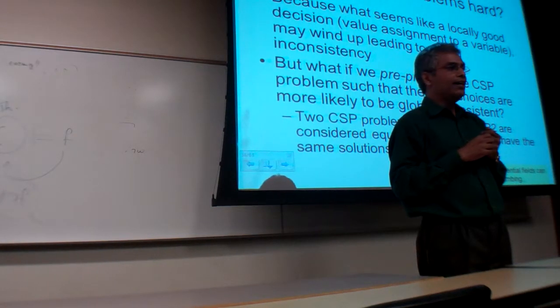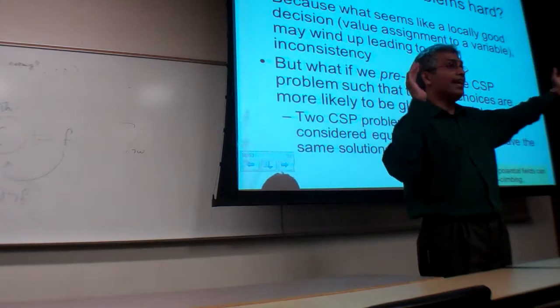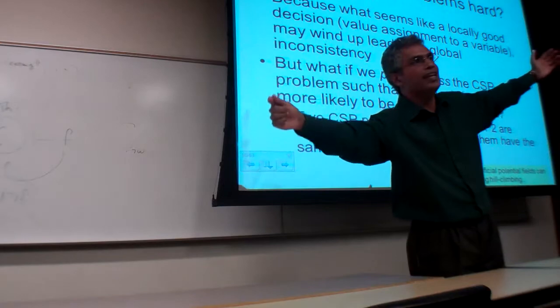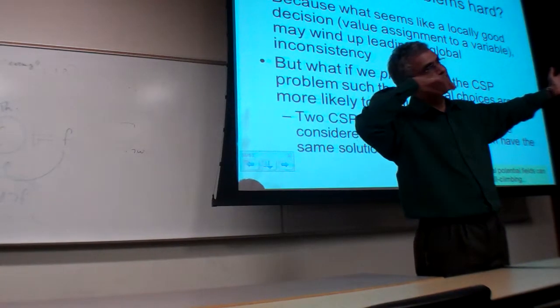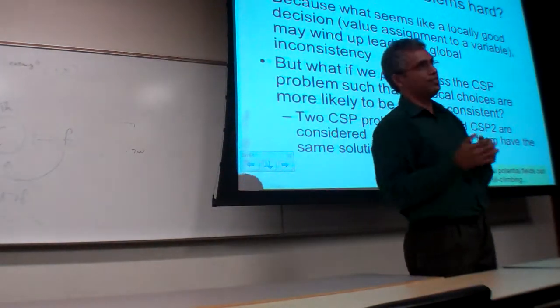And a CSP is considered n-consistent. That means you can take any n-1 partial assignment and can extend it to any n-th variable. And a CSP is considered strongly n-consistent if it is one-consistent, two-consistent, three-consistent, all the way to n-consistent.